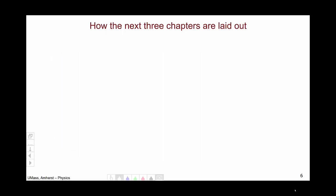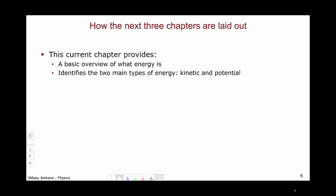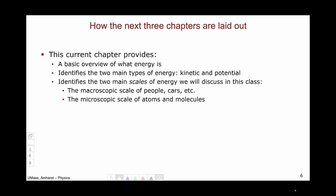Let's review how the next three chapters are laid out. This current chapter provides a basic overview of what energy is, identifies the two main types of energy: kinetic and potential, and identifies the two main scales of energy we'll discuss in this class: the macroscopic scale of people, cars, etc., and the microscopic scale of atoms and molecules.